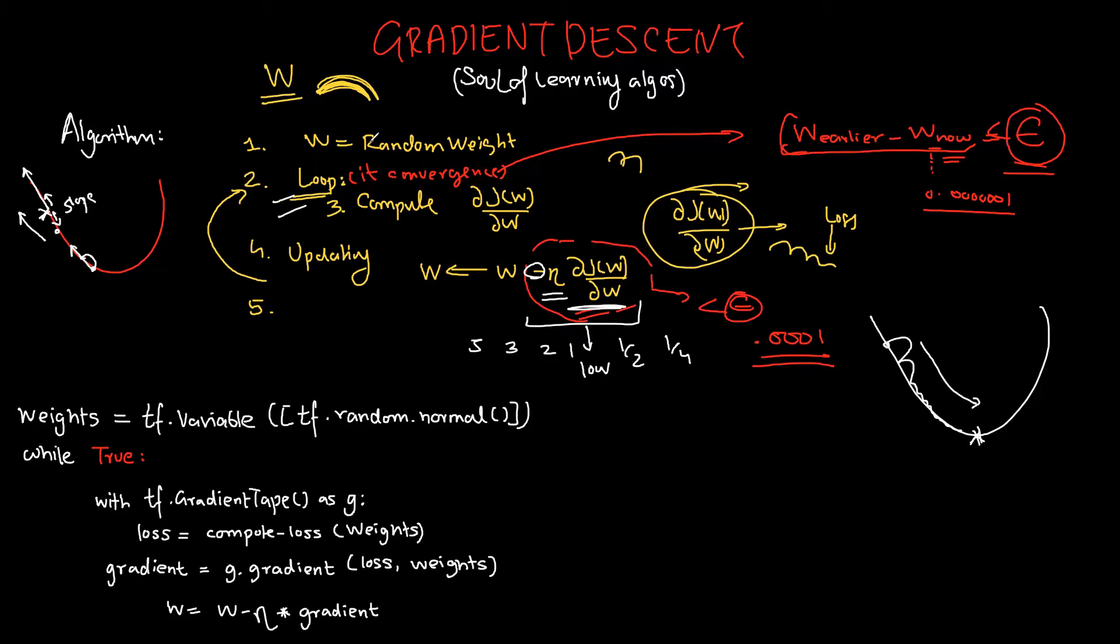If you want to see it in terms of code, this particular step one, the random allocation, is this particular code: weights equal to tf.variable at random. You can use other functions as well, but here, if you remember earlier, we defined tf.sequential.